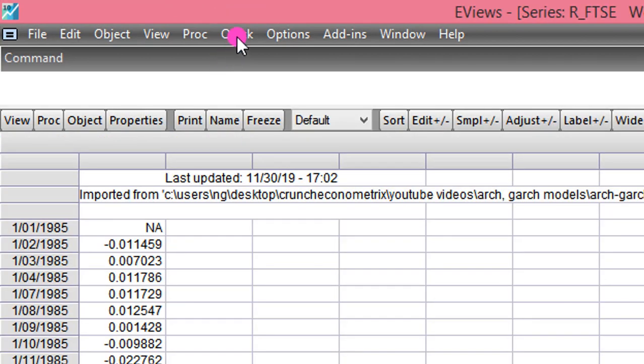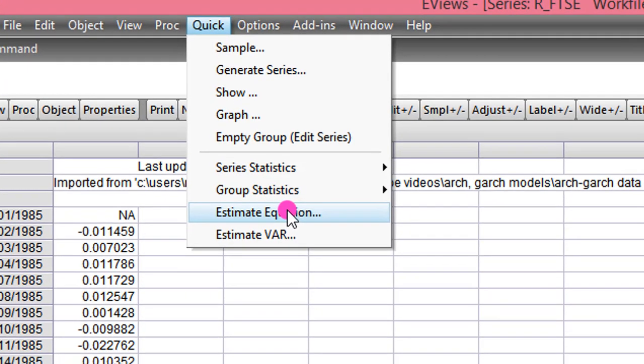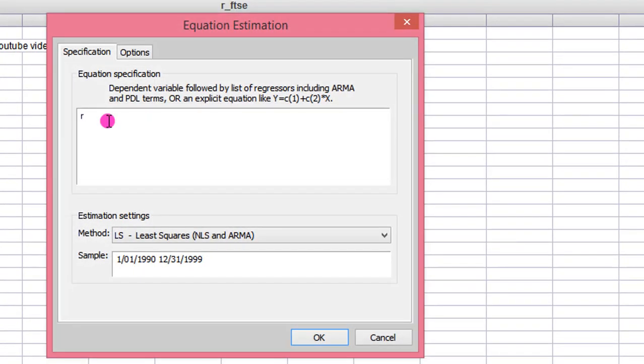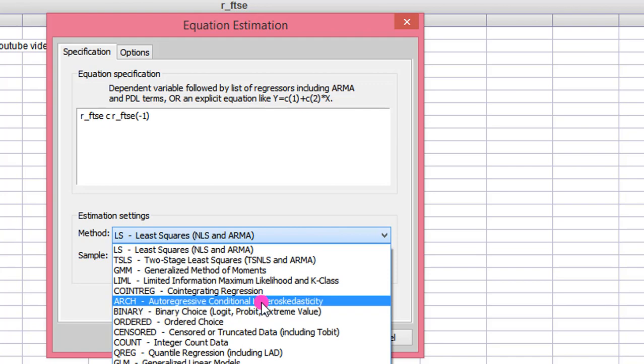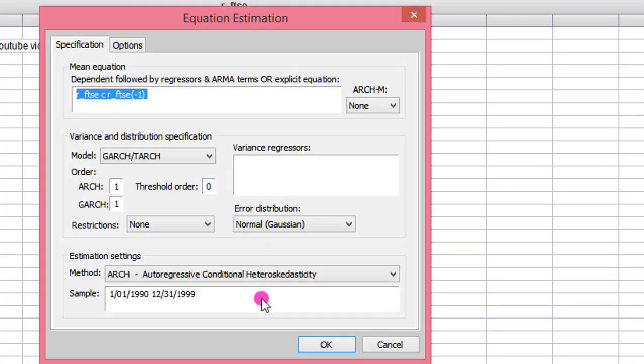I double-click on the series. I go to Quick, click on Estimate Equation. I list the series in the usual form that we've been using. I go to Methods, I change it to ARCH. Please follow me and do likewise with your data. Remember, we are estimating a GARCH-M model. So we come to this box and we change none to variance. So let's start with the variance first in the main equation.